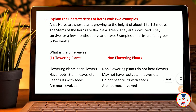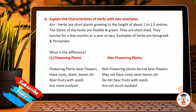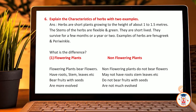Question 6: explain the characteristics of herbs with two points. Herbs are short plants growing to a height of 1 to 5 meters. The stems of herbs are flexible and green. They are short-lived and survive for a few months or a year or two. For example, fenugreek and periwinkle.